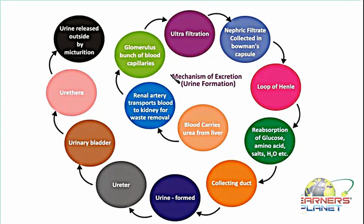Here is a flow chart showing the mechanism and the steps involved in the formation of urine and its removal from the body. Initially, filtration occurs in the glomerulus — in the Bowman's capsule. Basically, this filtration is removing out the toxic substances or the waste material from the body.